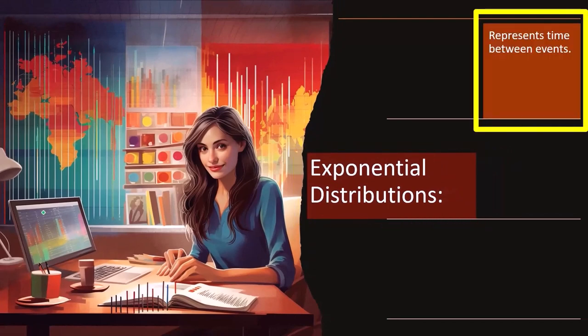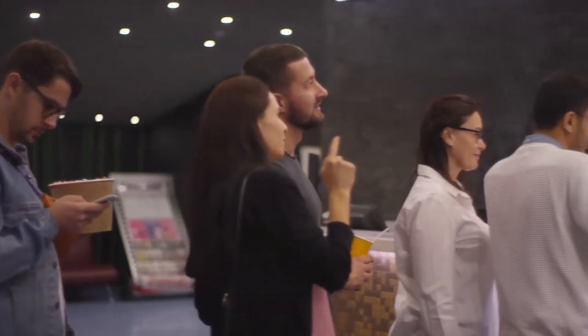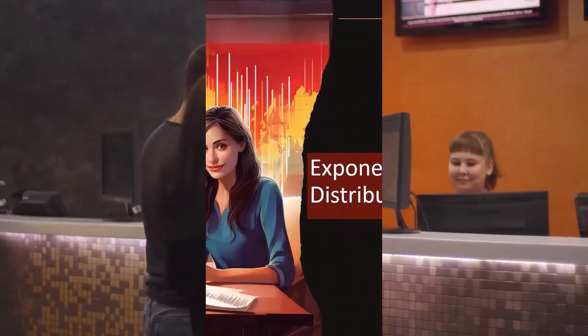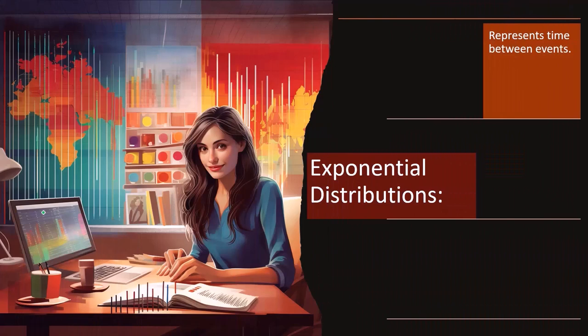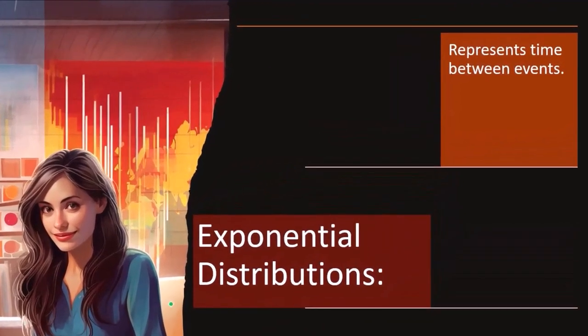The next one is the exponential distribution. So it represents time between events. And this one is often related to a Poisson distribution. So in other words, if you're looking at a line waiting situation, then the Poisson distribution is telling you or asking the question of how many cars are arriving in a certain interval of time, or what are the likelihood that how many cars arrive in a certain interval of time, like a minute.